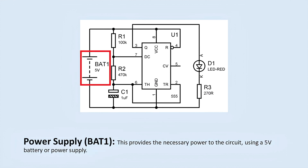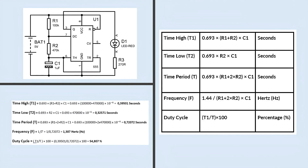Power Supply BAT1: This provides the necessary power to the circuit using a 5V battery or power supply. On the screen, you can see the charge time of the C1 capacitor, discharge time of the C1 capacitor, total period, operating frequency, and duty cycle values. These values are directly proportional to the R1 resistor, R2 resistor, and C1 capacitor used in the circuit.